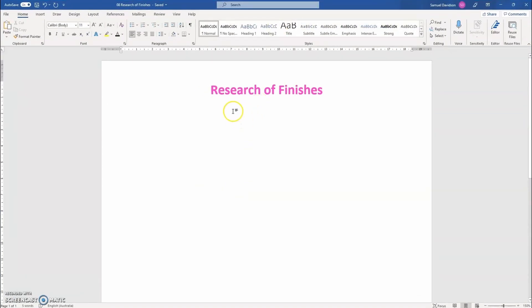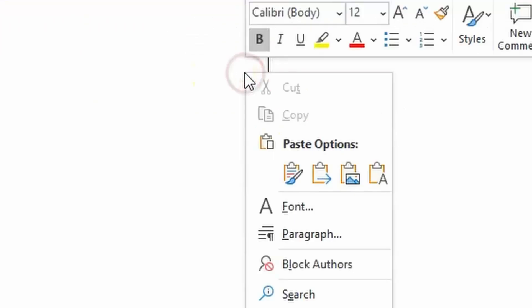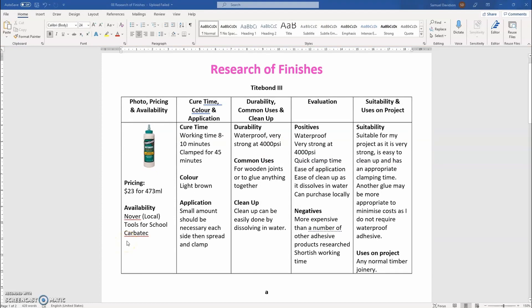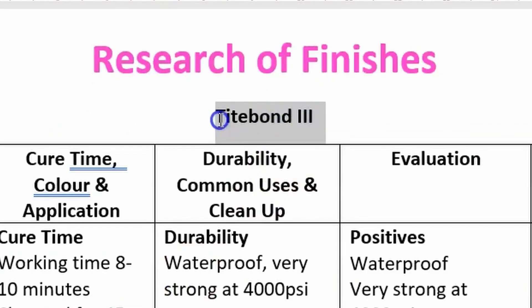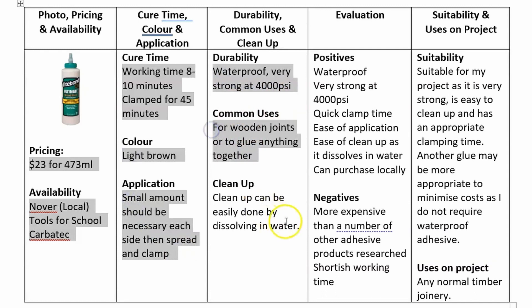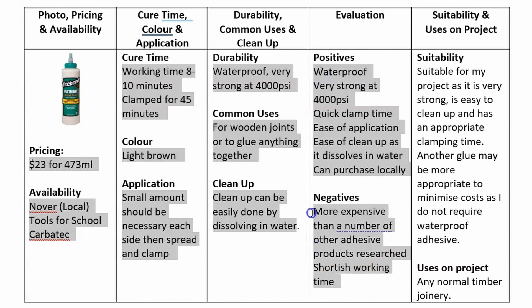This can be done by right-clicking on the document and going down to the Paste option. It is important to change the title — remove the Typebond 3 heading and change it to Danish Oil. From there, select and delete all of the information in your table except the headings. All of the bolded text in the table must remain. This is what it should look like once you've done that.